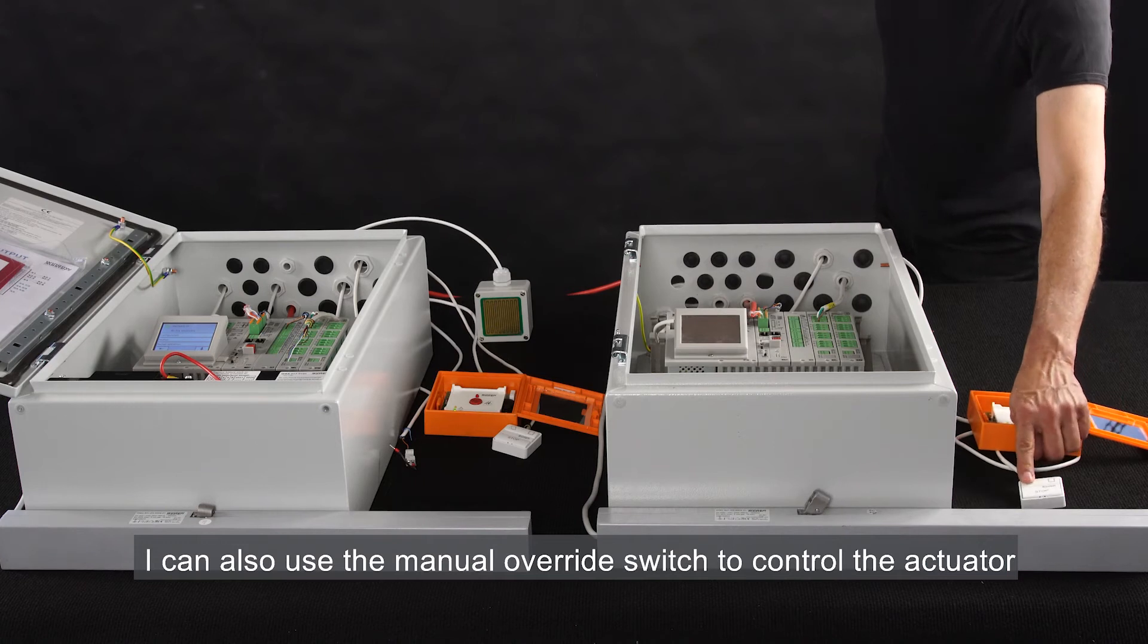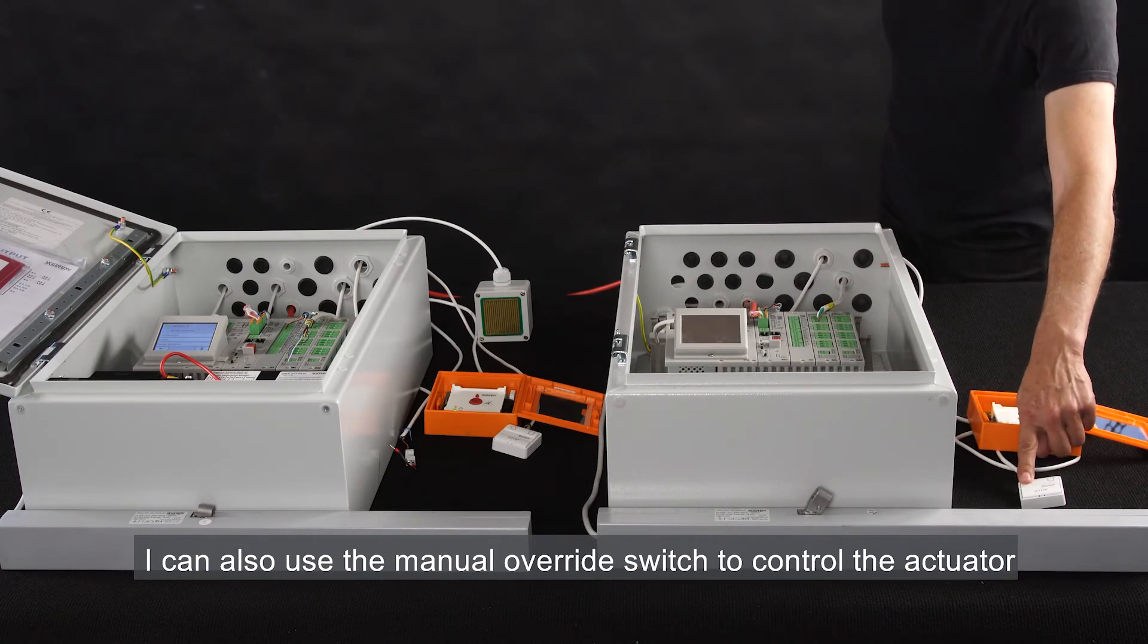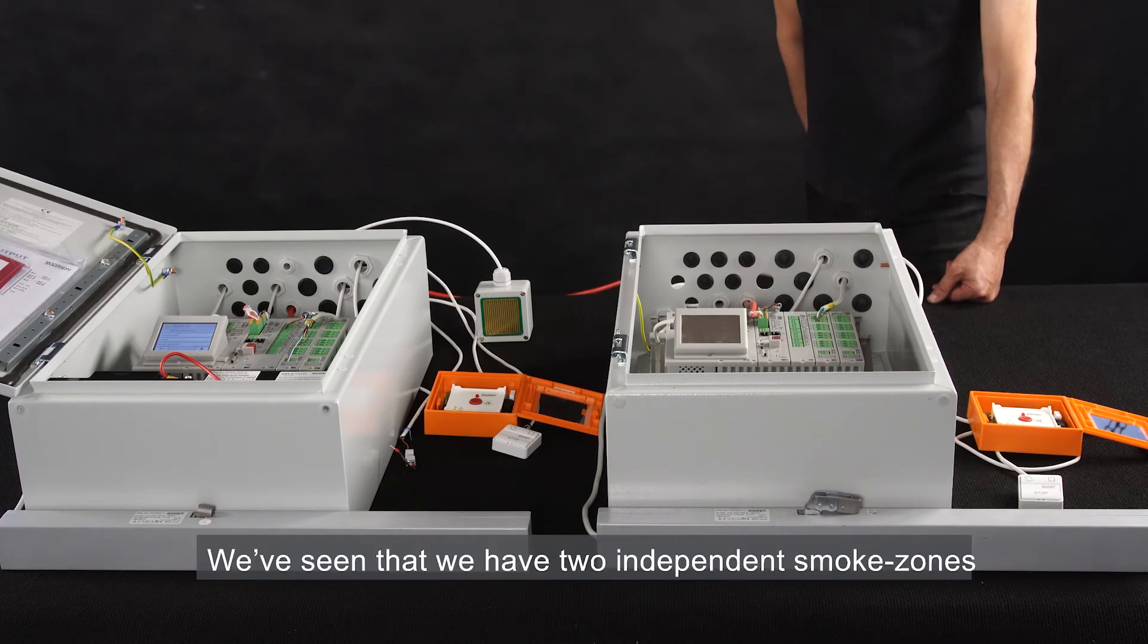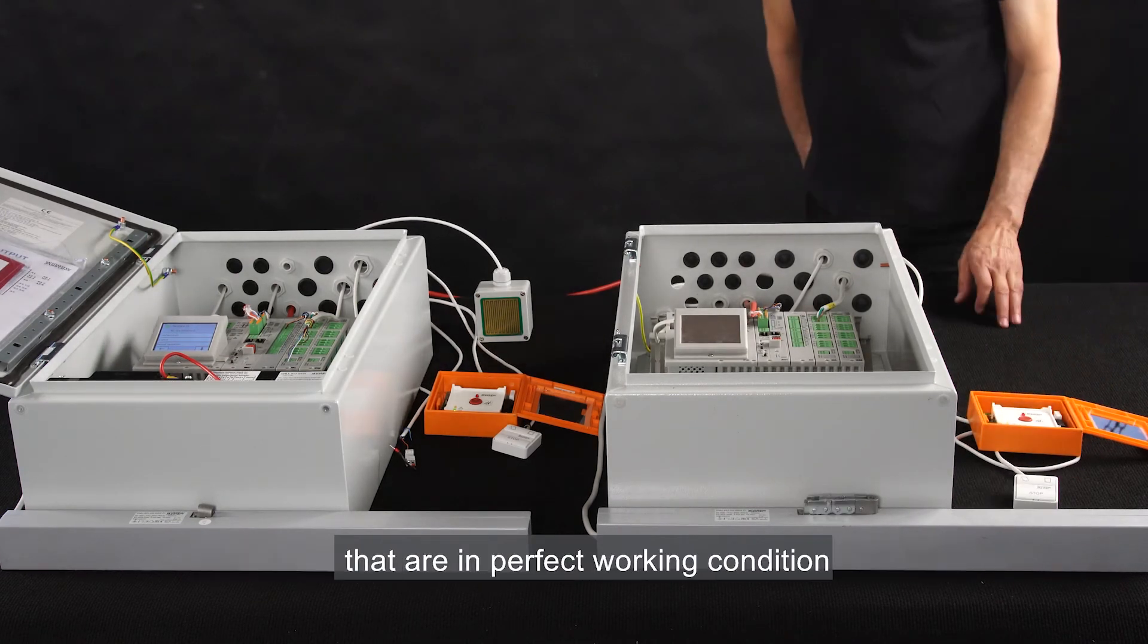I can also use the manual override switch to control the actuator. We've seen that we have two independent smoke zones that are in perfect working condition.